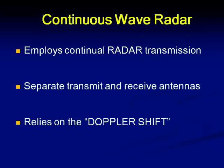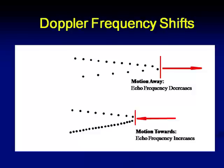Let us see what is a continuous wave radar, how does it operate, what are the advantages, and what are the limitations. By the name itself, we understand that it employs continuous radar signals. There will be separate antennas for transmission and reception. The basic principle of operation depends on Doppler shift. Let us first understand what this Doppler shift is. It is dependent on the Doppler phenomenon.